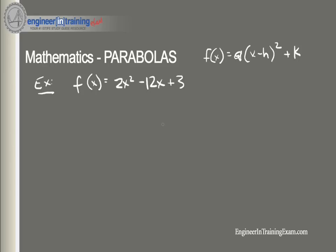Let's say we're given f(x) = 2x² − 12x + 3. The process is the same concept — the end result is the same. The first thing we want to do is make sure that the x² term has a coefficient of 1, so we need to factor out 2. We get 2 multiplied by (x² − 6x + 3/2).